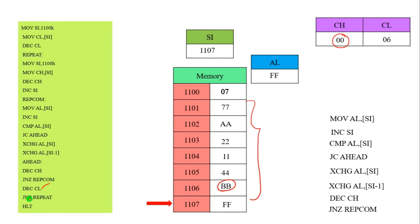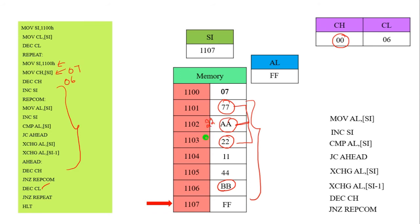The CL register value is not equal to 0, so we move back to the repeat step. The SI value is moved into CH — that value becomes 07. Decrement of CH. Again we perform the comparison: 77 is compared with AA, 11 is compared with AA, 44 is compared with AA, and so on. Like that, we perform the comparison operation until the CL register value becomes 0. Once the CL register value becomes 0, we obtain the ascending order.